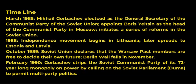Timeline: March 1985 — Mikhail Gorbachev elected as General Secretary of the Communist Party of the Soviet Union, appoints Boris Yeltsin as head of the Communist Party in Moscow, and initiates a series of reforms in the Soviet Union. 1988 — Independence movement begins in Lithuania, later spreads to Estonia and Latvia. October 1989 — Soviet Union declares that Warsaw Pact members are free to decide their own future; the Berlin Wall falls in November.